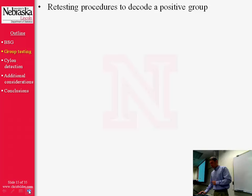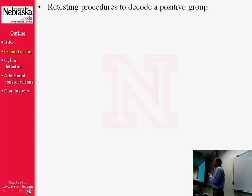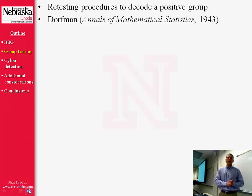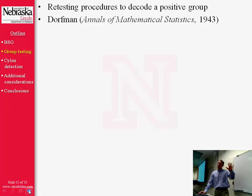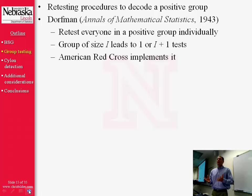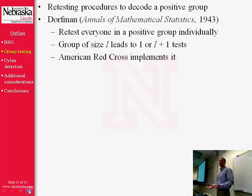Let's talk about four different retesting procedures that can be used to determine who's positive and who's negative inside a positive group. The first was originally proposed by Dorfman back in 1943 — he wanted to screen American soldiers during World War II for syphilis. His procedure says: if you have a positive group, simply retest everyone in that positive group individually. So in the end, for a group of size I, you'll either have one test if the group tested negative, or I plus one tests if the group tested positive. This is what the American Red Cross uses with their groups of size 16.